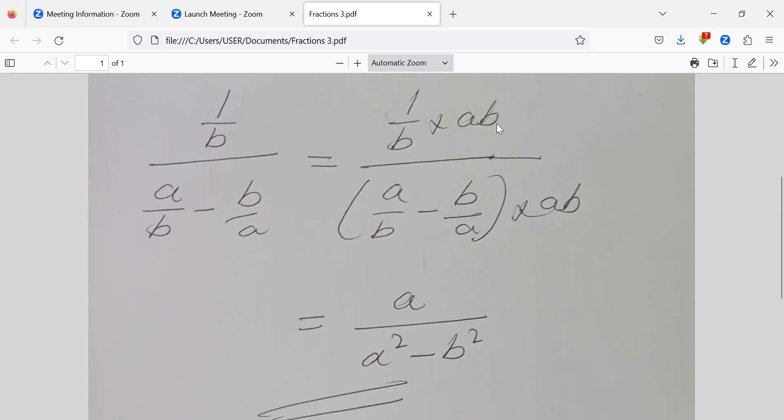b will divide b and we'll get a times 1, so we'll get a here. a over b times ab - this b will divide itself and divide b once, we get a times a, which is a squared. We bring our minus: b over a times ab will also give us a. We'll divide a and then we get b times b, which is b squared.